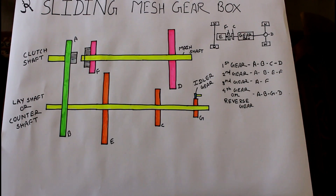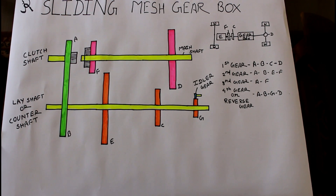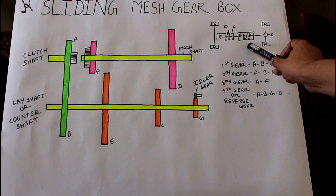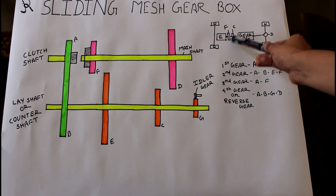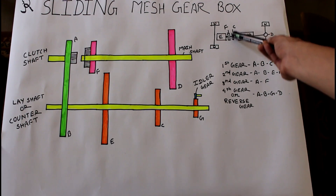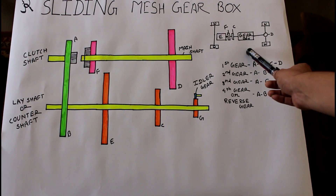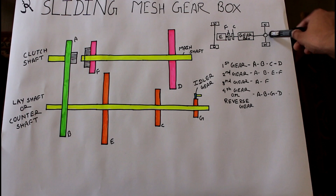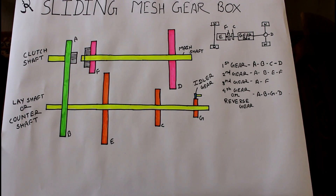The gearbox is a very important part of our transmission system. Looking at this diagram, you can see the position of the gearbox: engine, then flywheel, then clutch, and then the gearbox. The gearbox transmits power from the engine to the wheels with the help of the propeller shaft and differential, in different ratios — so if you want different speeds and torque, we have to use the gearbox.